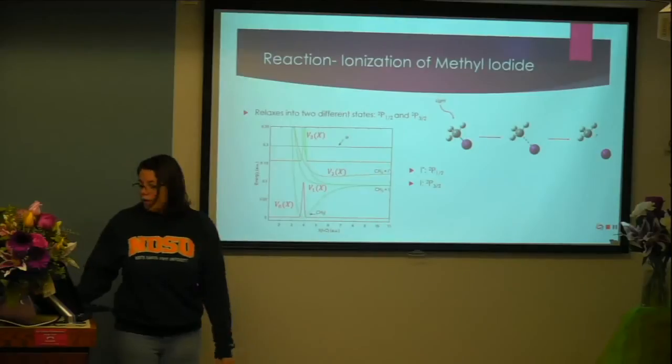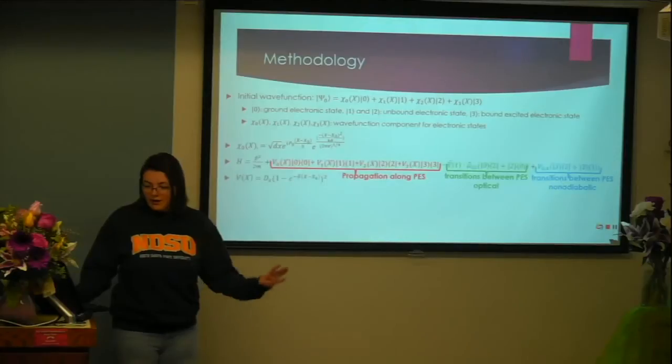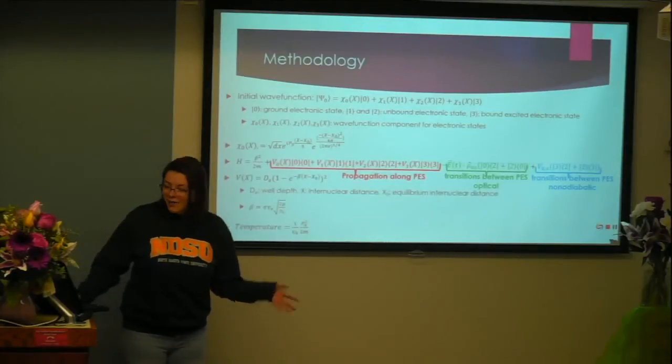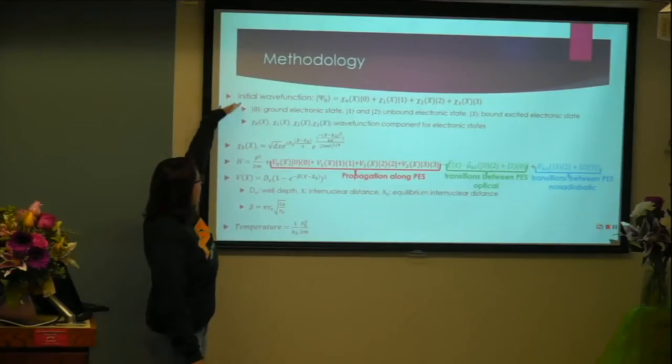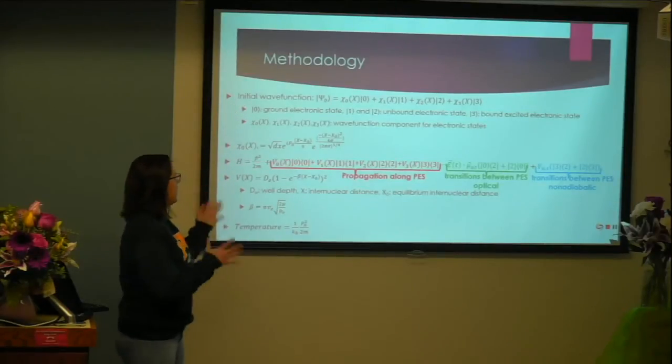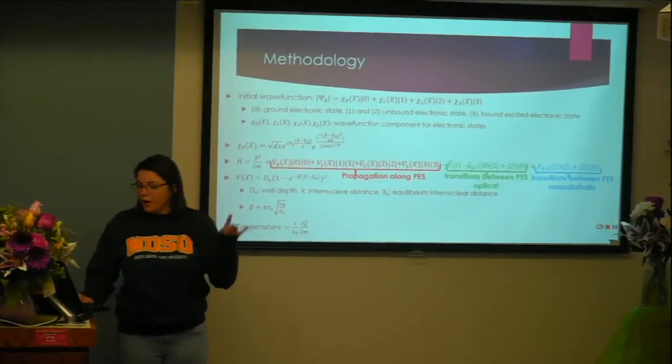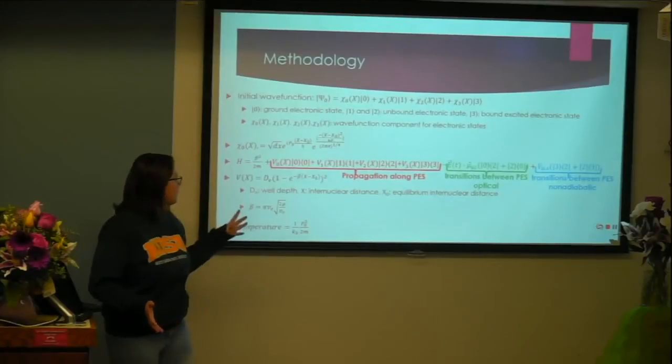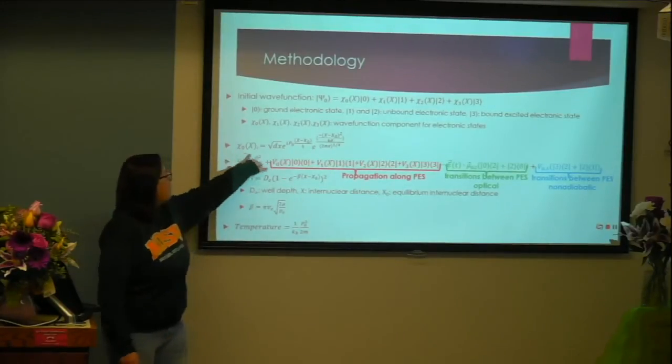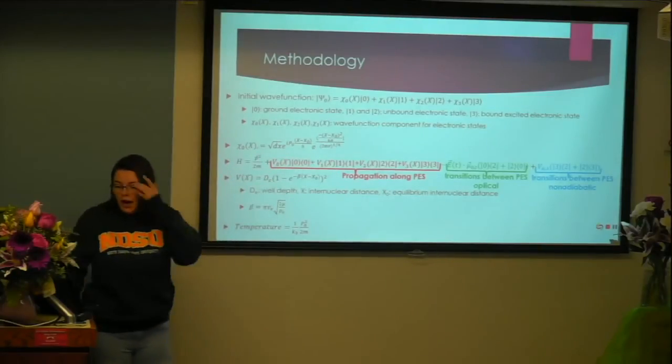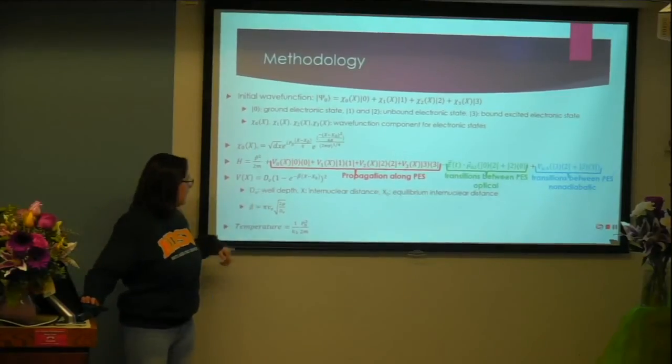I'm not going to get into methodology, but it's all here. This is the initial wave function, so it has a few different components. We have the Hamiltonian, the actual equation for the natural wave function, the potential energy surface calculations, as well as how I converted the temperature in relation to momentum.